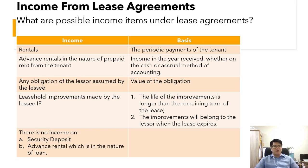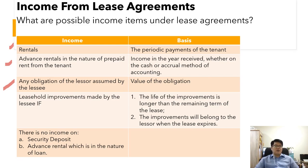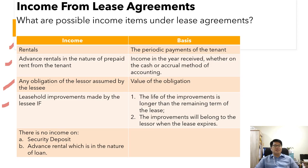Now let us discuss income from lease agreements. The possible income items under lease agreements are: first, rentals or periodic payments from the tenant; second, advanced rentals in the nature of prepaid rent — income received whether on cash or accrual method of accounting must be declared as income; third, any obligation of the lessor assumed by the lessee; and fourth, leasehold improvements made by the lessee. Note that there is no income on security deposit or advance rental in the nature of a loan.